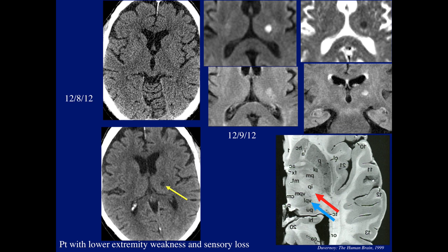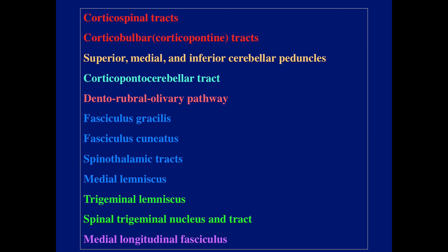So, this is the end of today's talk. So far we've covered all these tracts. What's left is the trigeminal lemniscus and the spinal trigeminal nucleus and tract, which I'll talk about next week with the trigeminal nerve, and the last tract — the medial longitudinal fasciculus, the MLF — I will cover when I talk about the fourth nerve. That is all for today. Thank you for participating.